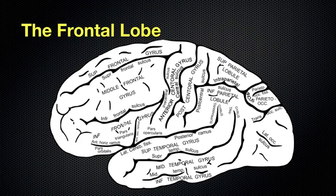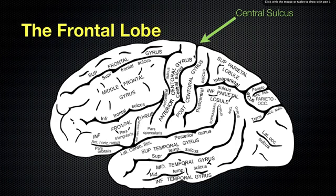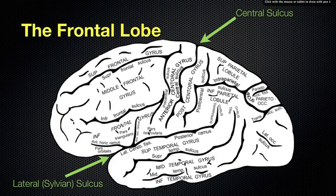The frontal lobe has two major boundaries. We have the central sulci, which is the posterior boundary — that's towards the back. Then if we go inferiorly, we have the lateral sulci, or we can call it the sylvian sulci — that's the boundary on the inferior end of the frontal lobe. So: central sulci posteriorly, and sylvian or lateral sulci inferiorly.